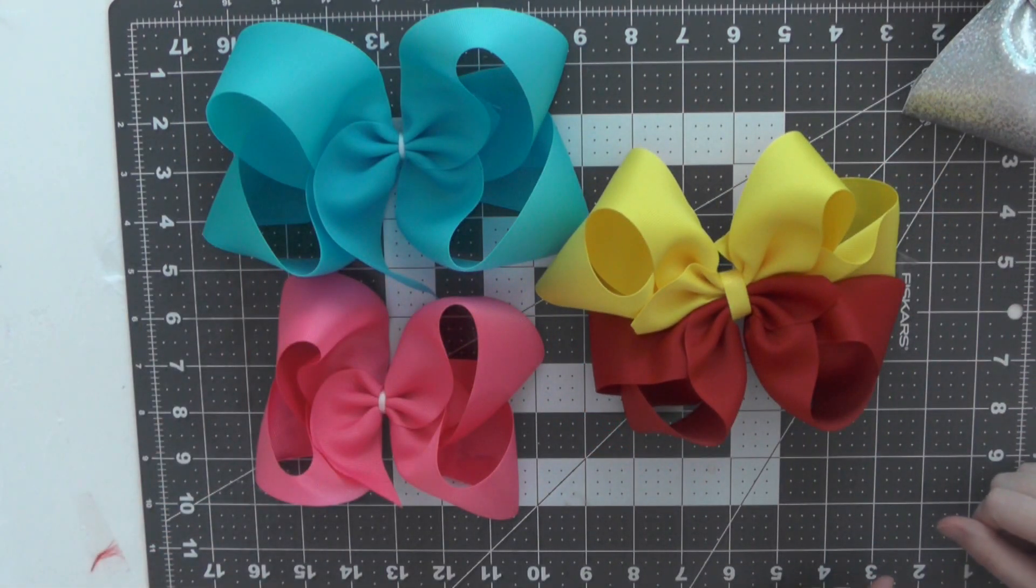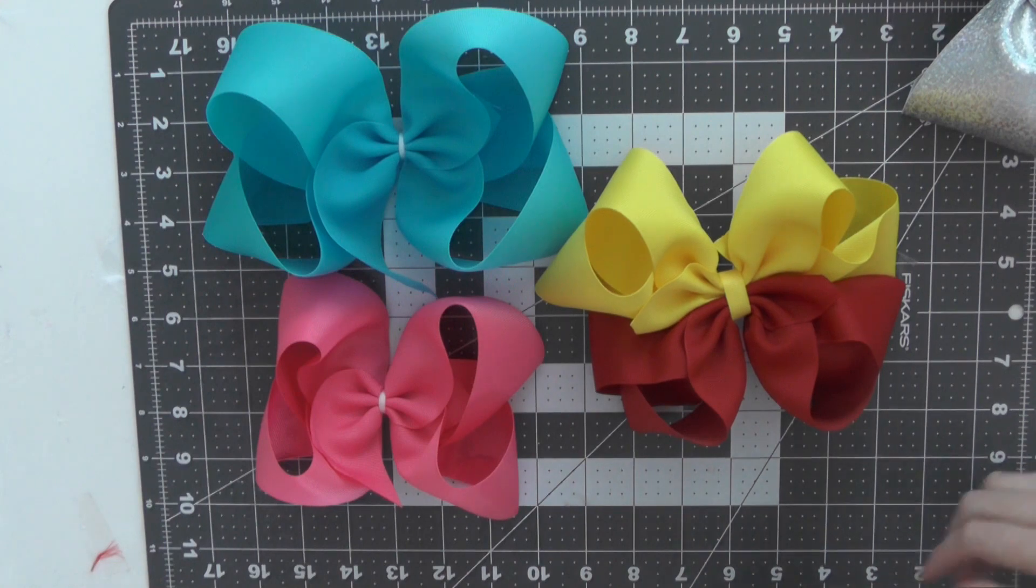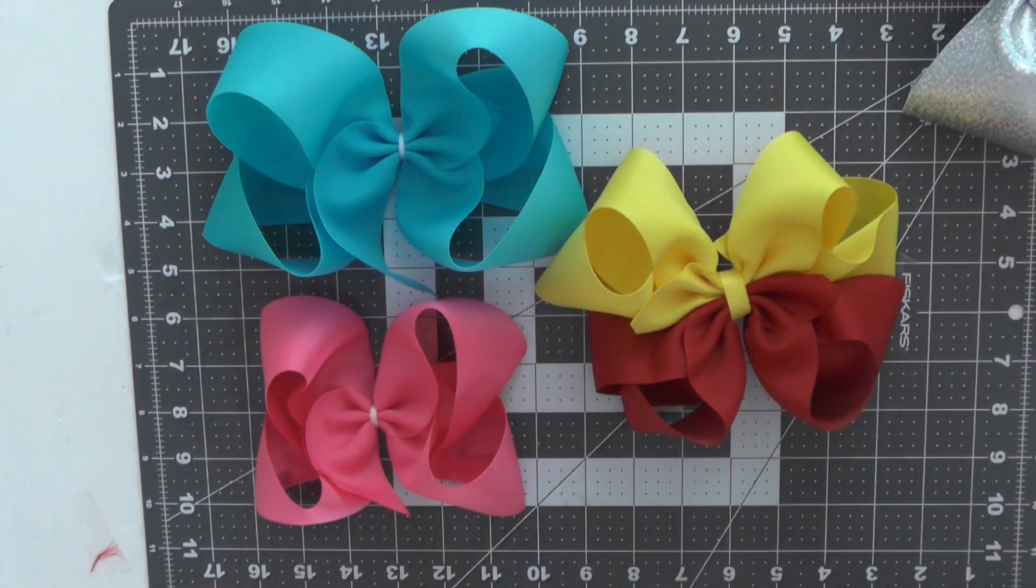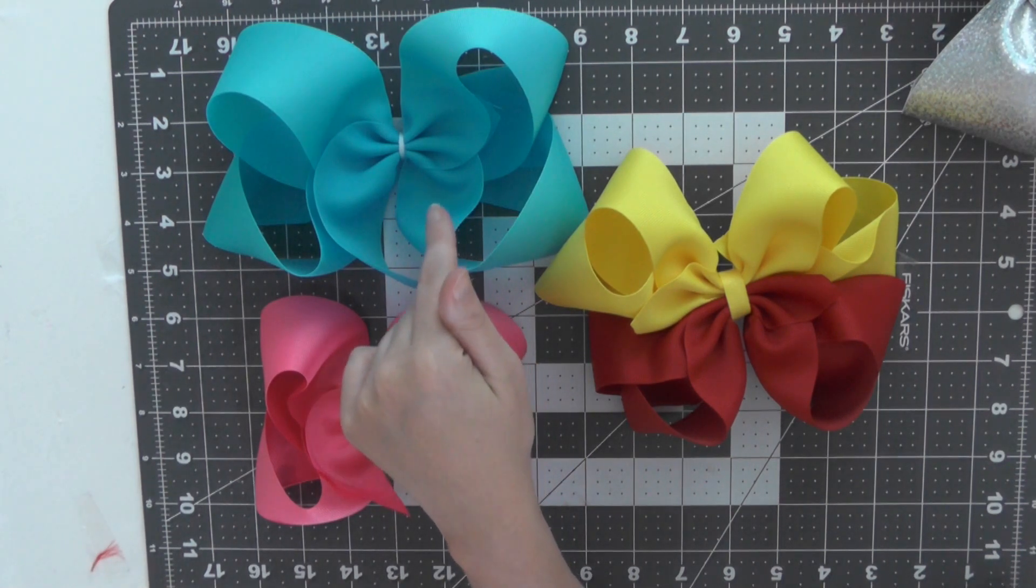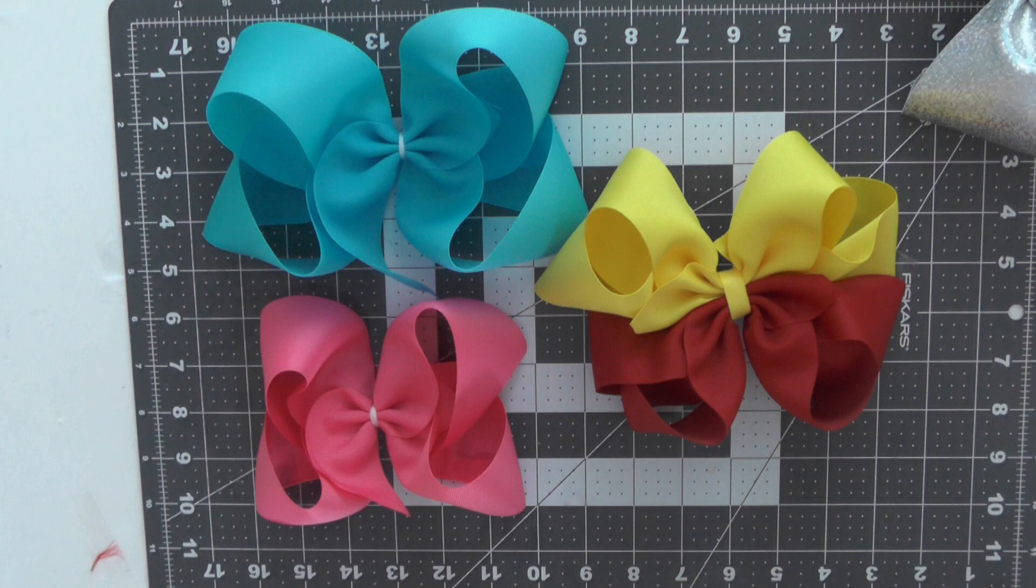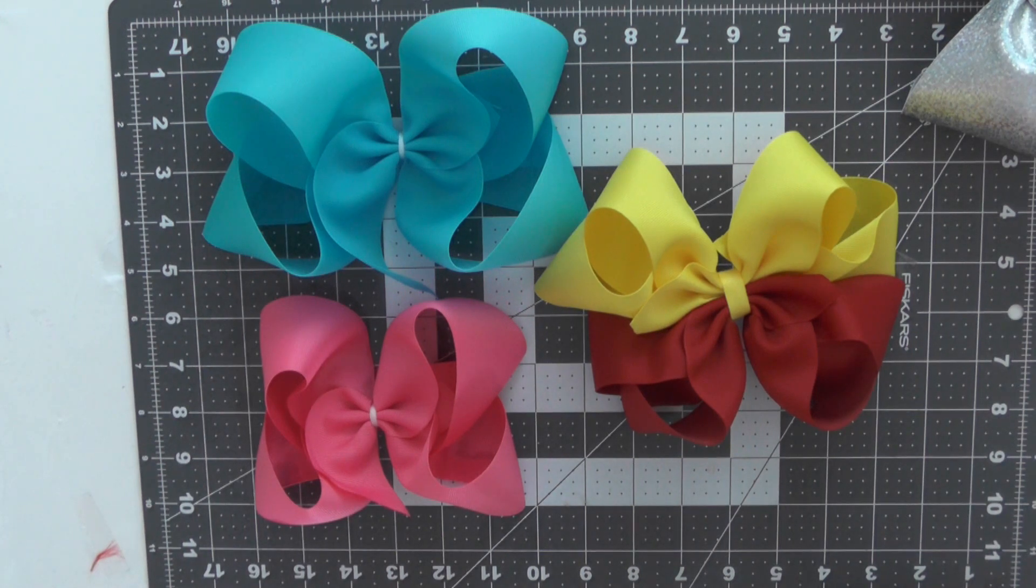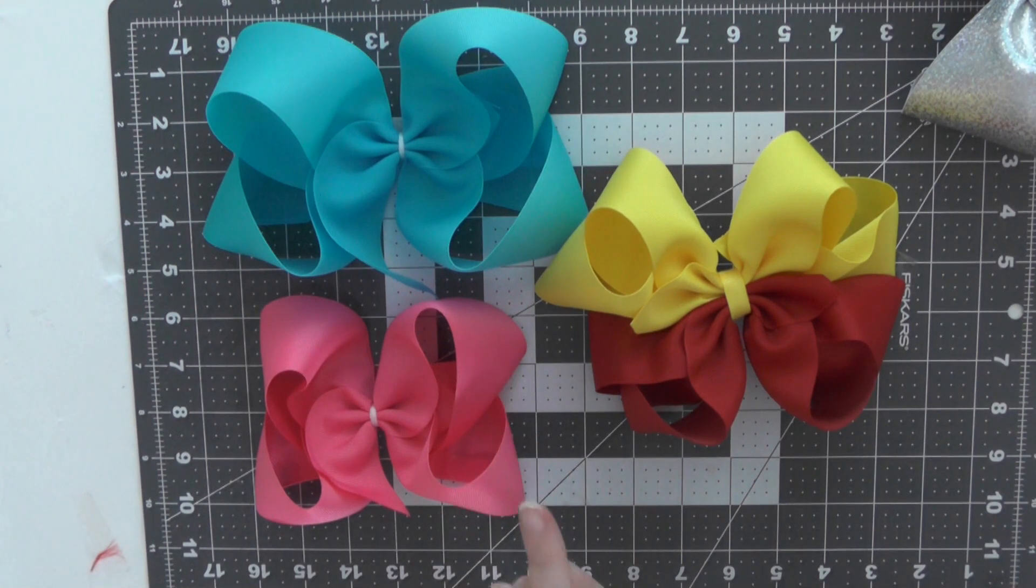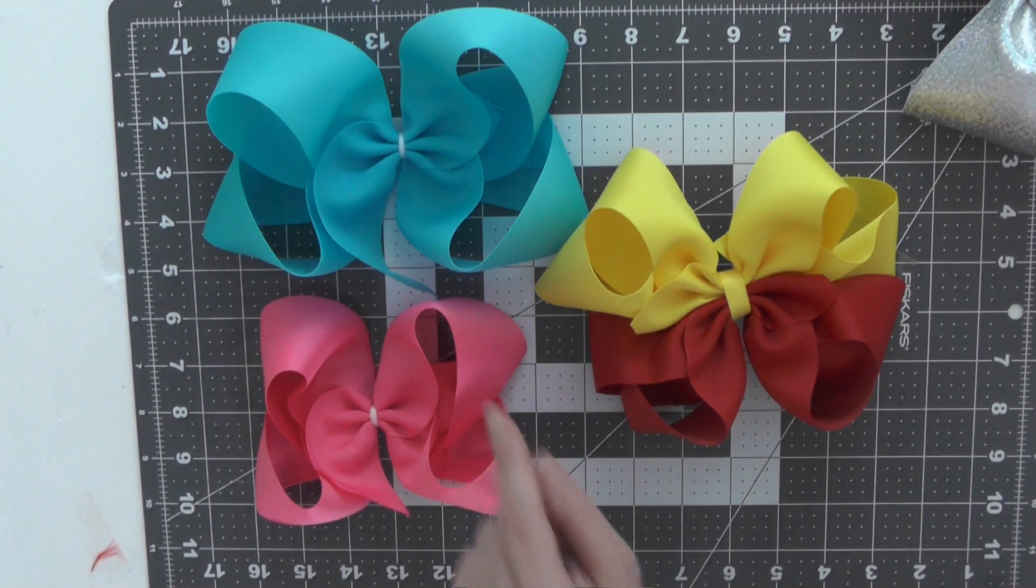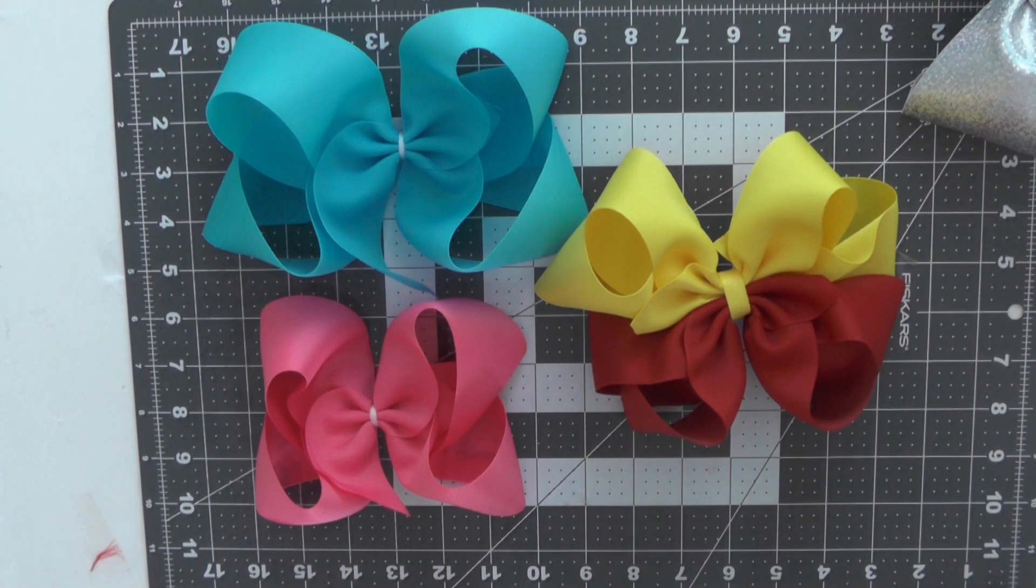But that is all for today. Again, these right here used two inch ribbon. This one, I cannot wait to dry and put on a clip and see how huge it's going to be on Kennedy's head should be quite funny. Let me know down below what size ribbon you want me to work with next and be sure to visit the Facebook page and leave me some photos if you make any hair bows.